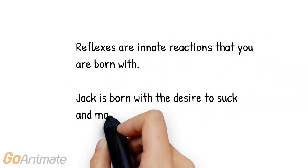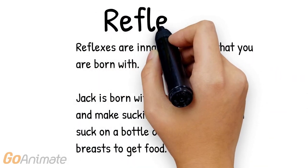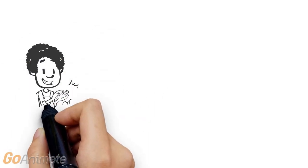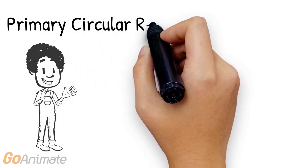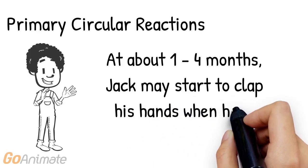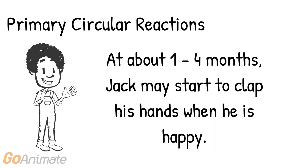Substage one of the sensorimotor stage is a child's reflexes. Reflexes are innate reactions that a child is born with that help him or her survive. For example, the rooting reflex is how a child knows to suck or make sucking motions on a bottle or his mother's breast to get food. Circular reactions are repeated acts not intended to accomplish a goal. When done within his or her own body, it's called a primary circular reaction, which happens from one to four months.